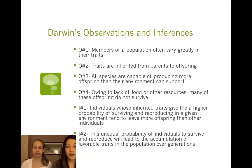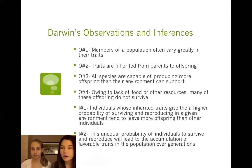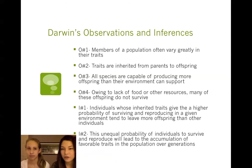Darwin made four observations and two inferences. His first observation is that members of a population often vary greatly in their traits. Also, traits are inherited from parents to offspring. All species are capable of producing more offspring than their environment can support, and owing to lack of food or other resources, many of these offspring do not survive because of competition.